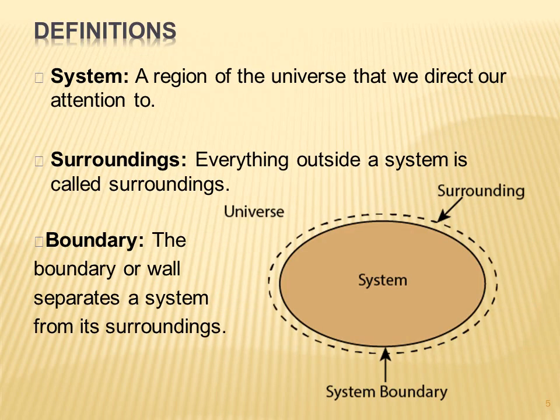We have another definition: the universe. We have a system — what we call a region of the universe that we direct our attention to. Everything outside the system is called the surroundings. A boundary or wall separates the system from its surroundings — the system is inside, and there is a boundary with the surrounding outside.